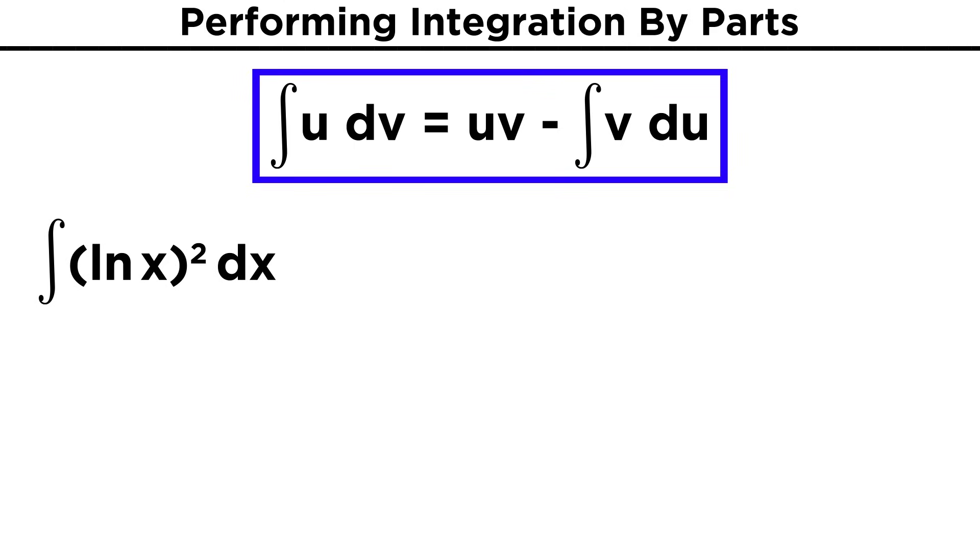How about one more for good measure? Let's evaluate the integral of the natural log of x quantity squared dx. Here we have only one choice, u will be this term, and dv will simply be dx. So getting du will require the chain rule, and we get two times ln(x) times the derivative of ln(x), which is one over x.